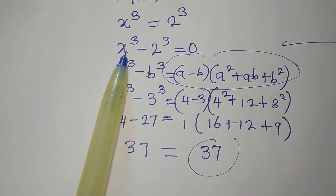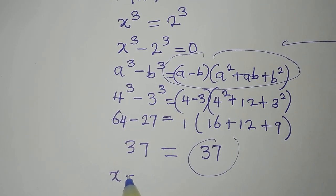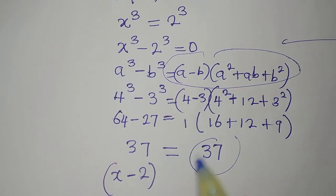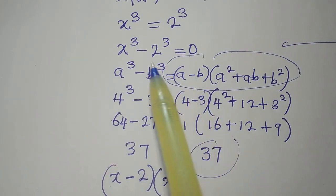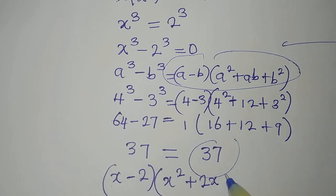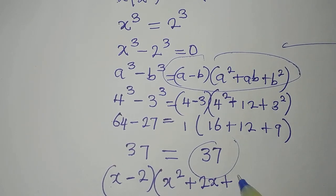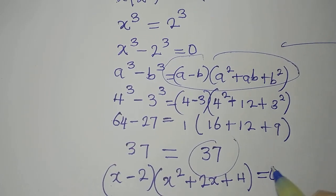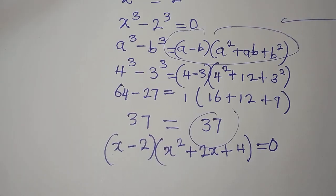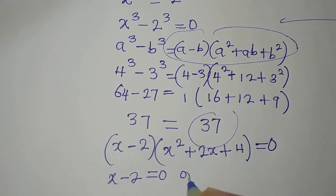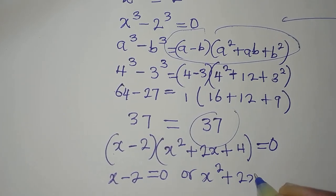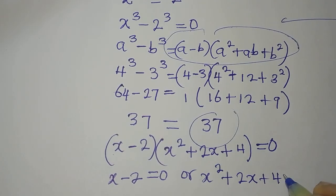So let's apply this to our problem. Our x to the power of 3 minus 2 to the power of 3 becomes x minus 2, because a is x and b is 2, into a squared which is x squared, plus ab which is x times 2 giving 2x, plus b squared which is 2 squared giving 4. So this is equal to 0. We are multiplying two factors to get 0, so we apply the zero product rule: either x minus 2 equals 0, or x squared plus 2x plus 4 equals 0.